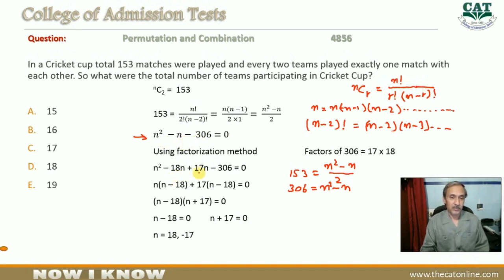The two factors of 306 are 18 and 17. So we write n squared minus 18n plus 17n minus 306 equals 0. Taking n common gives n minus 18, and 17 common gives n minus 18. So the factors are n minus 18 and n plus 17 equals 0, giving us n equals 18 or n equals minus 17.